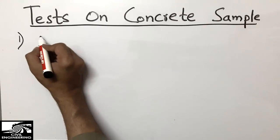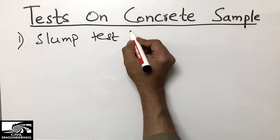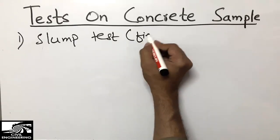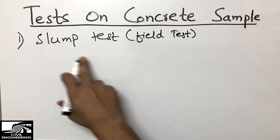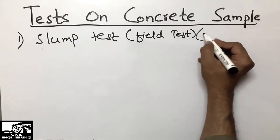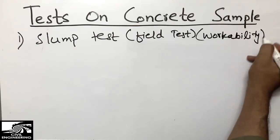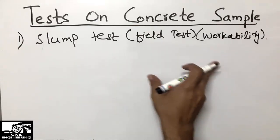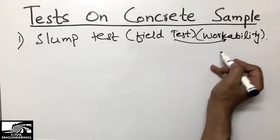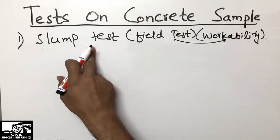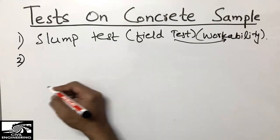The first and most important test on concrete is the slump test. It is mainly a field test because it is performed mainly in the field, not in the laboratory. The slump test is used to check the workability of concrete. There are different types of slump, and this test is the most important and is used in every construction project.